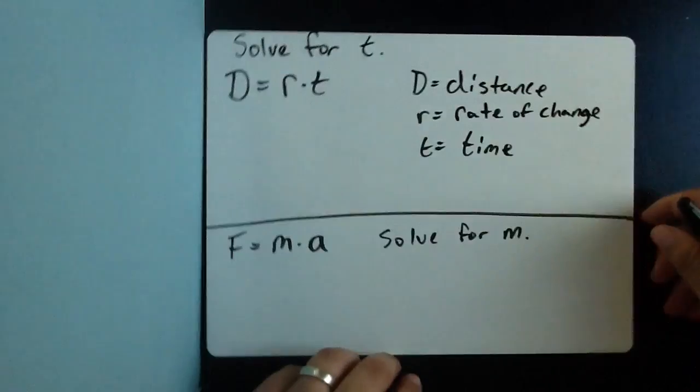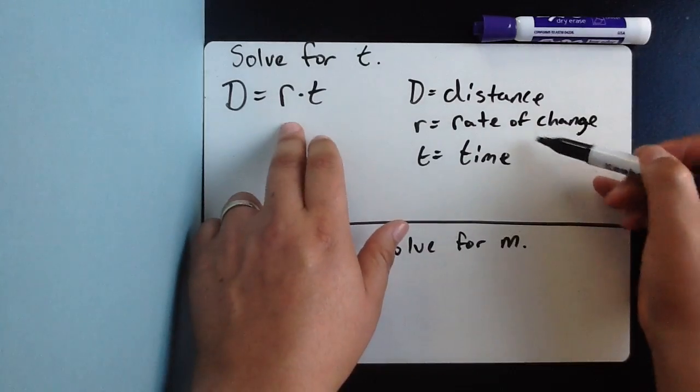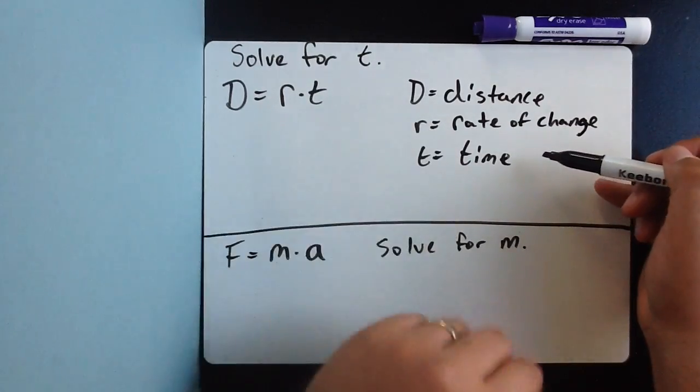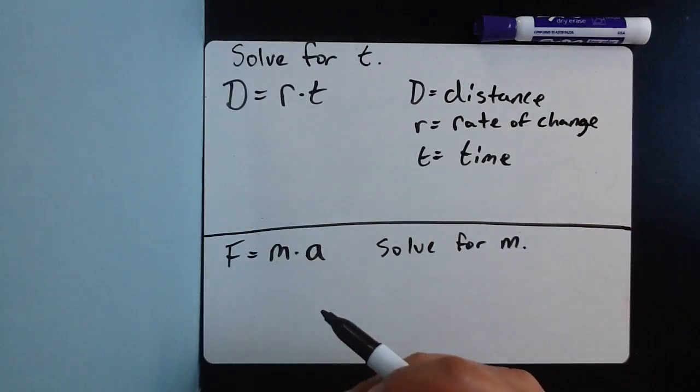So, let's do one more, just so you can understand how it applies to even other fields. D is distance, is equal to the rate of change times time. And the instructions is, well, take this formula, and I want to solve for t, for time.